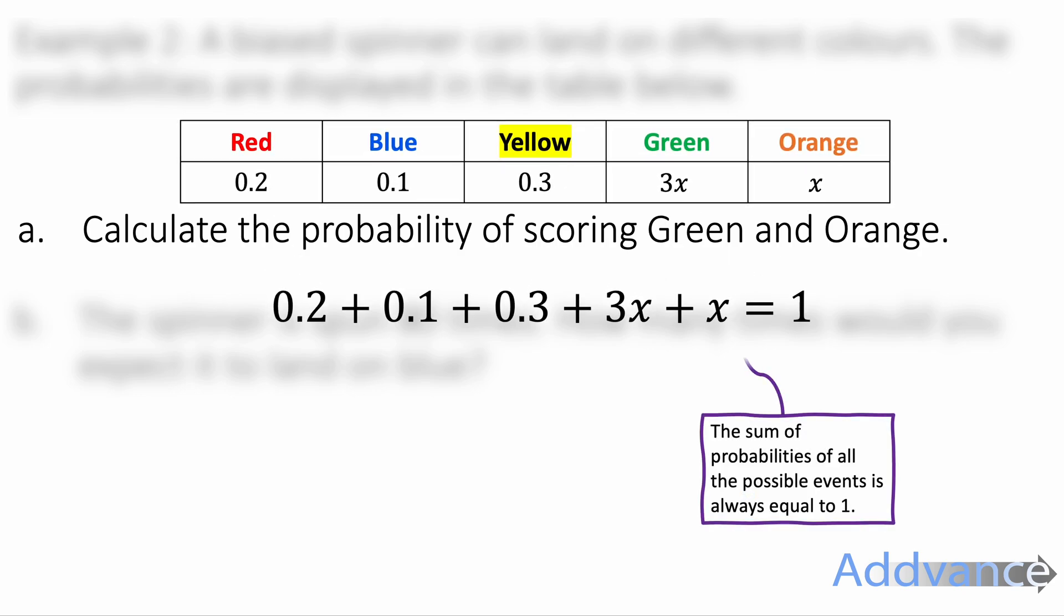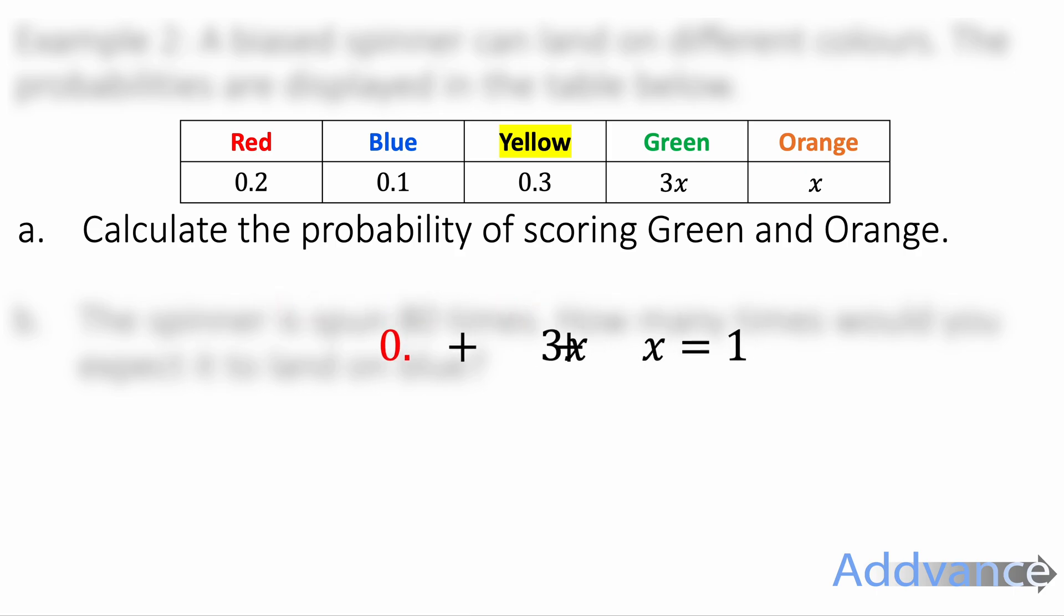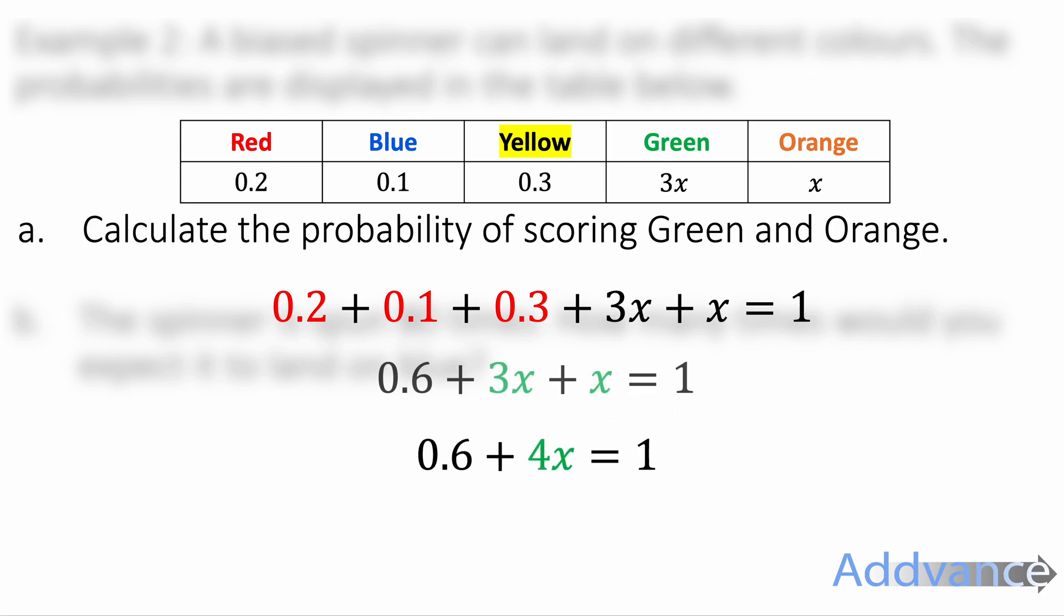So we add up all those probabilities and we make them equal to 1. We need to do a bit of simplifying now. The first 3 numbers are all numbers, we can add those together. 0.2 plus 0.1 plus 0.3 is the same as 0.6. Then we've got the x's. 3x plus x is 4x. We have simplified that equation very nicely.